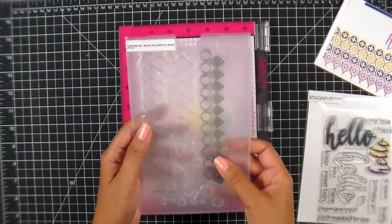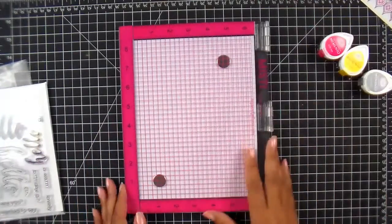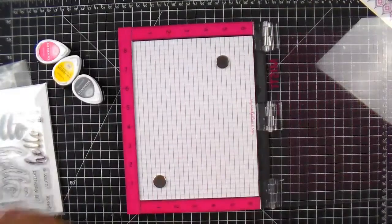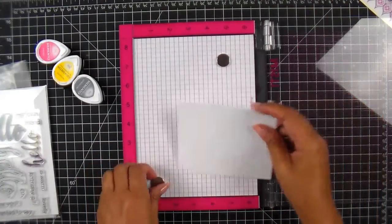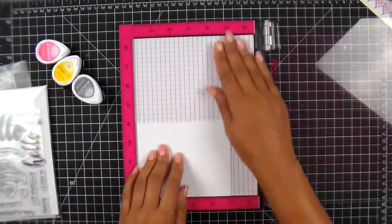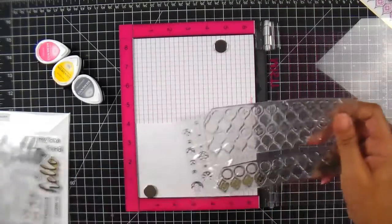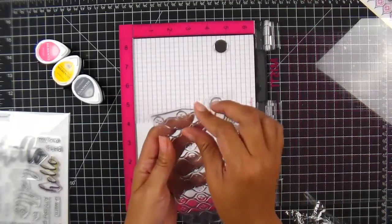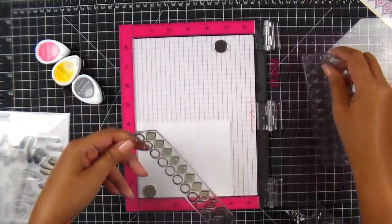Alrighty, let's get rocking and rolling. I'm going to open up my MISTI. I already have a piece of paper here that I cut down. I'm going to stick this in the corner, pull that down, and grab out my two stamps. I really love the design of this stamp here. It kind of gives me a Moroccan feel, and I actually love that.